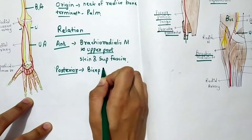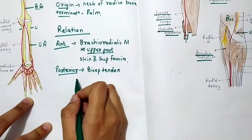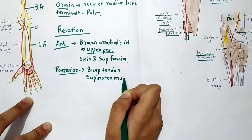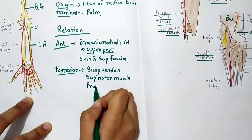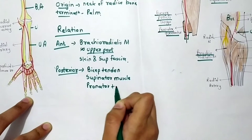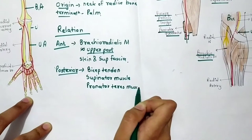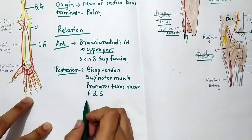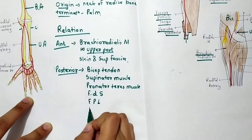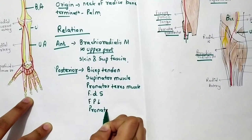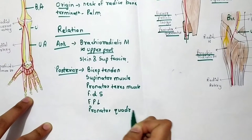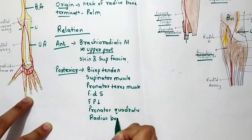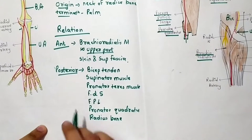So the posterior relations listed are: bicep tendon, supinator muscle, pronator teres muscle, flexor digitorum superficialis muscle, flexor pollicis longus muscle, pronator quadratus, and the radius bone itself. These are all the posterior relations. The anterior relation is only one muscle and then it becomes superficial.